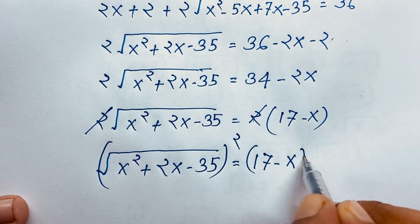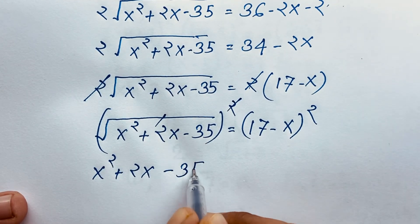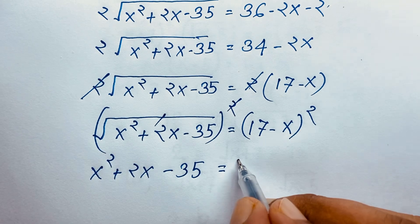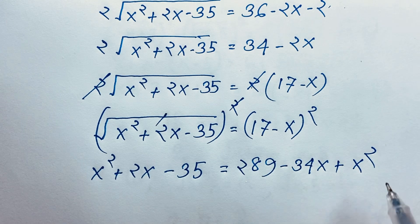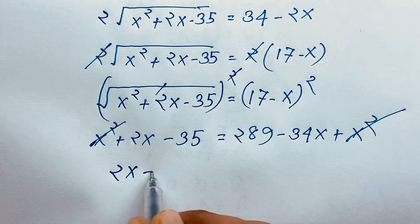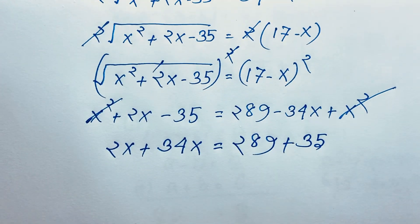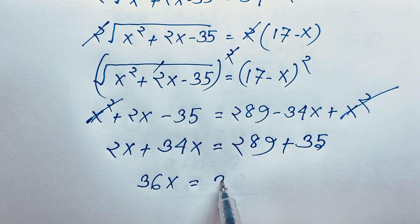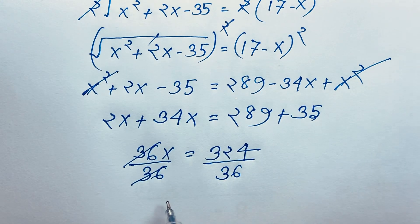Then I square both sides again. The square root cancels: x² + 2x − 35 equals (17−x)², which is 289 − 34x + x². The x² terms cancel. Moving terms: 2x + 34x equals 289 + 35, so 36x equals 324. Dividing both sides by 36, we find x is equal to 9. This is our final answer.